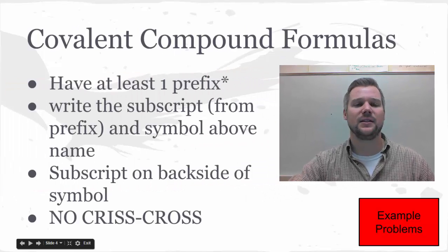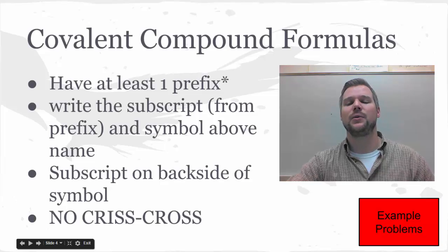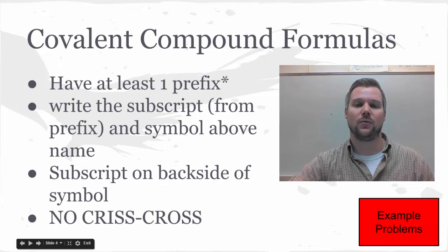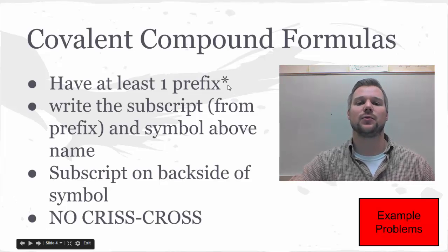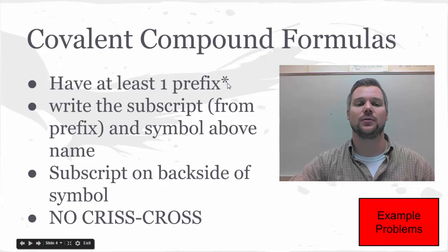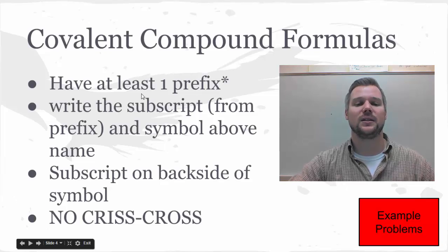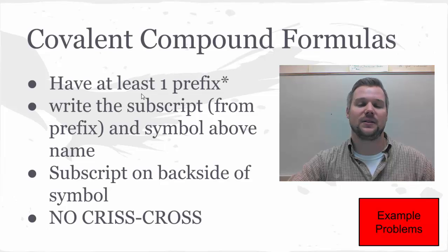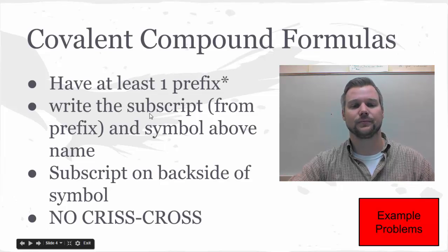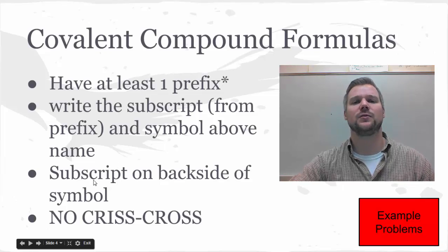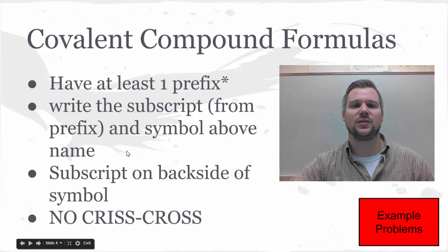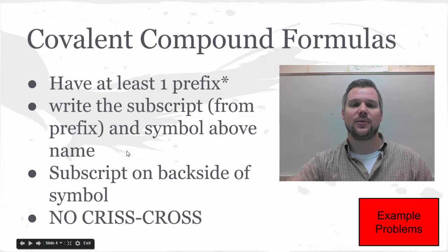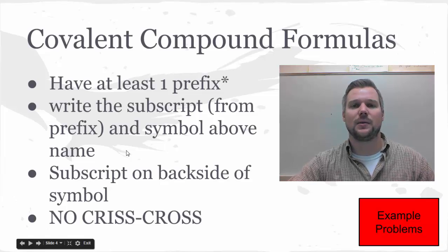Next comes covalent. This time you should see at least one prefix. Again, be on the lookout for dichromate - dichromate won't count. You might have two prefixes if both atoms have subscripts on them or will need subscripts. Write the subscript and the symbol above the name of the substance. The subscript just goes on the back side of the symbol. You're not going to do any crisscrossing here. That's the most common mistake I see students make. Use that prefix, write the number that prefix represents, and put it on the back side of that symbol.